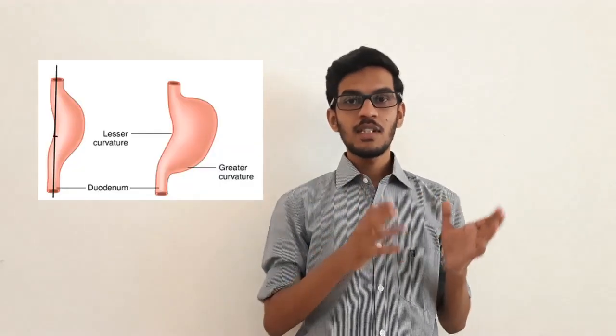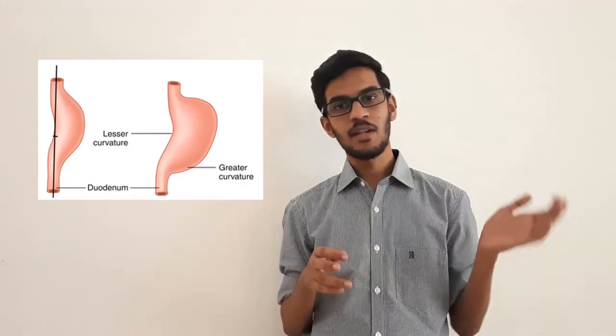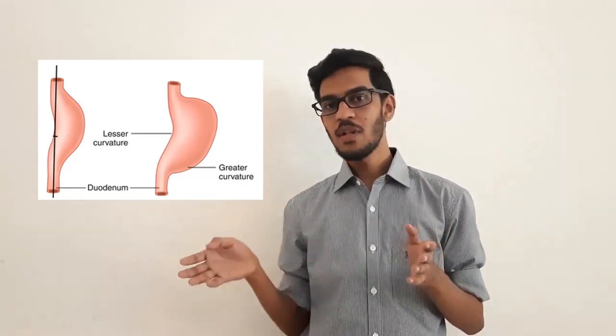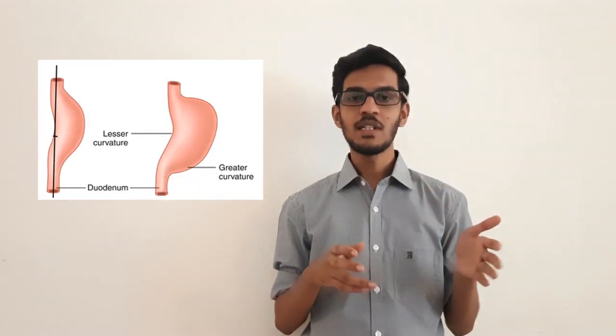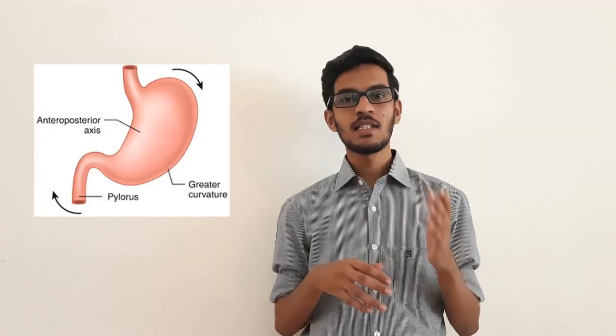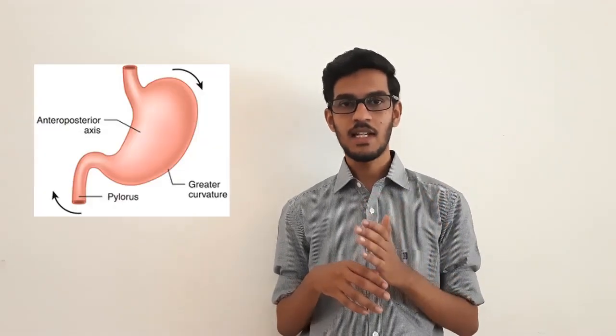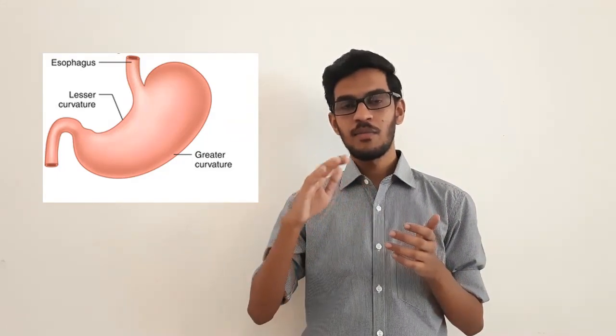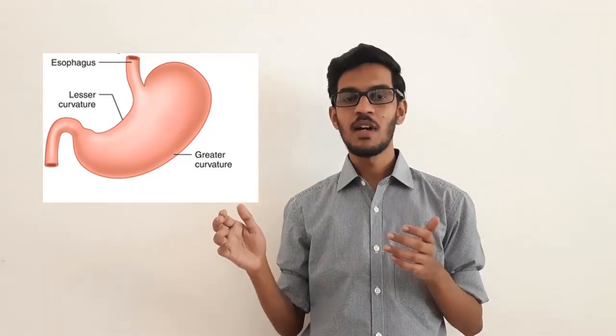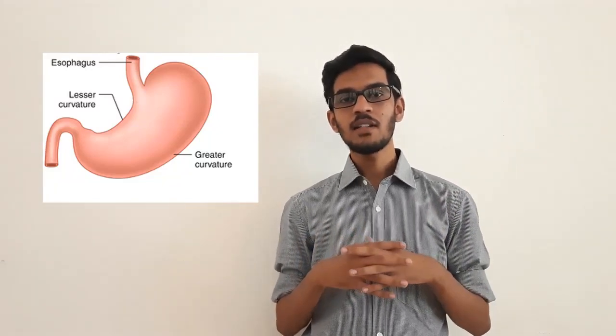The growth rate of the left border is more than the growth rate of the right border. Because of that, the left border becomes the greater curvature and the right border becomes the lesser curvature. The second rotation occurs on the anterior-posterior axis in clockwise direction. Due to this rotation, cardia moves little down and left, while pylorus becomes little above and right.